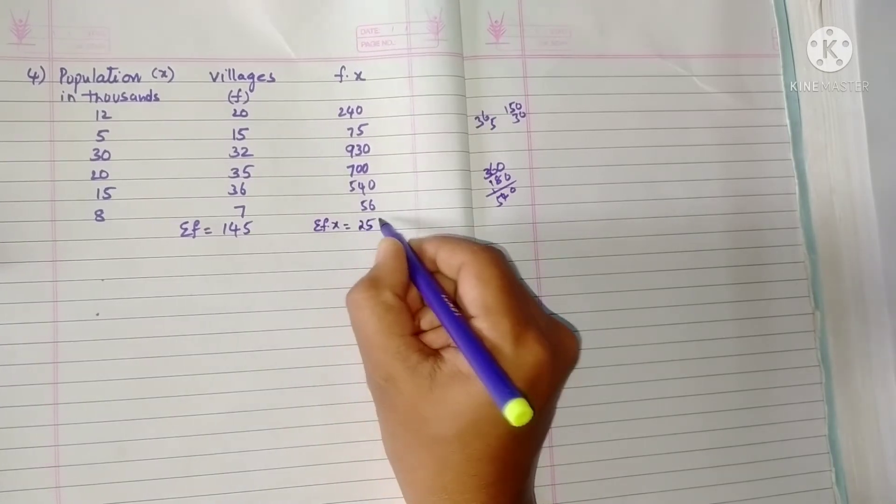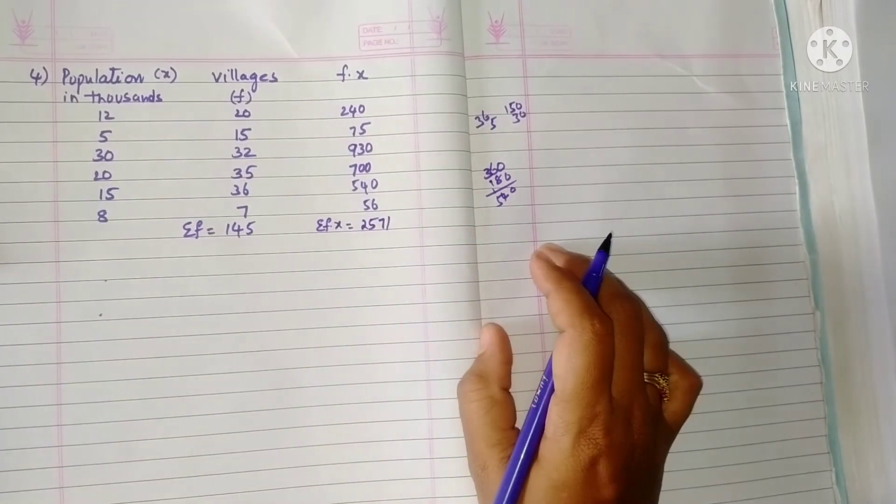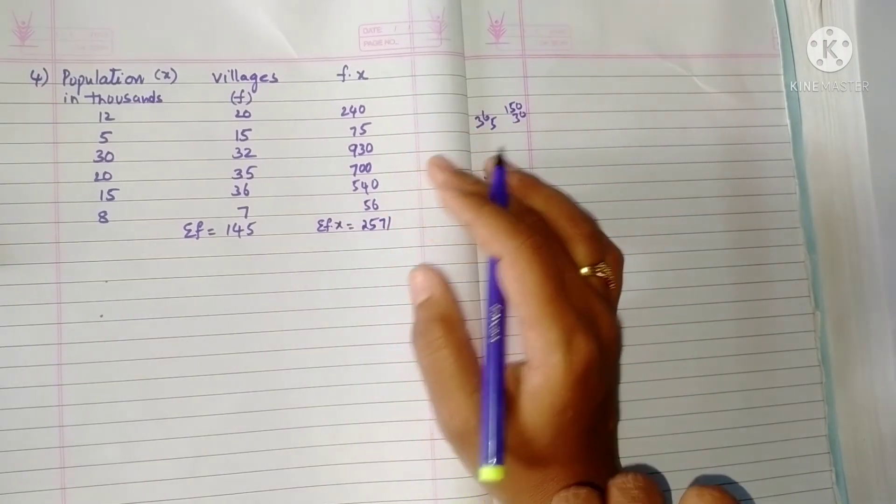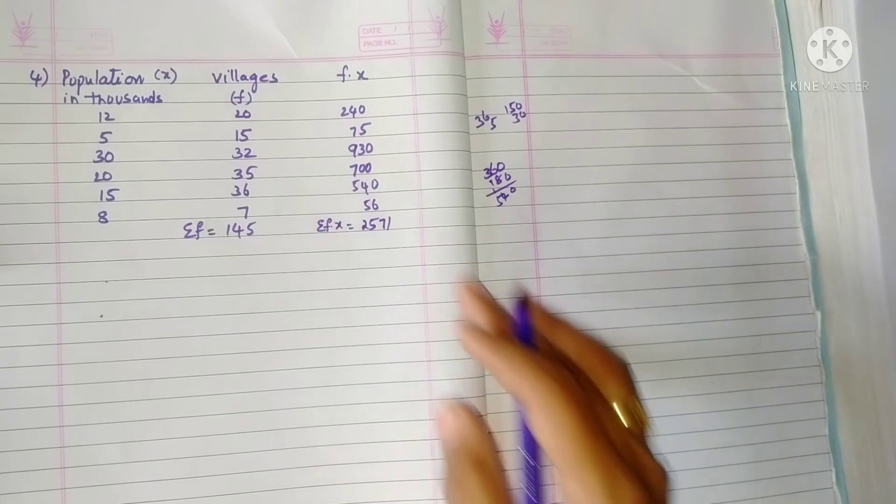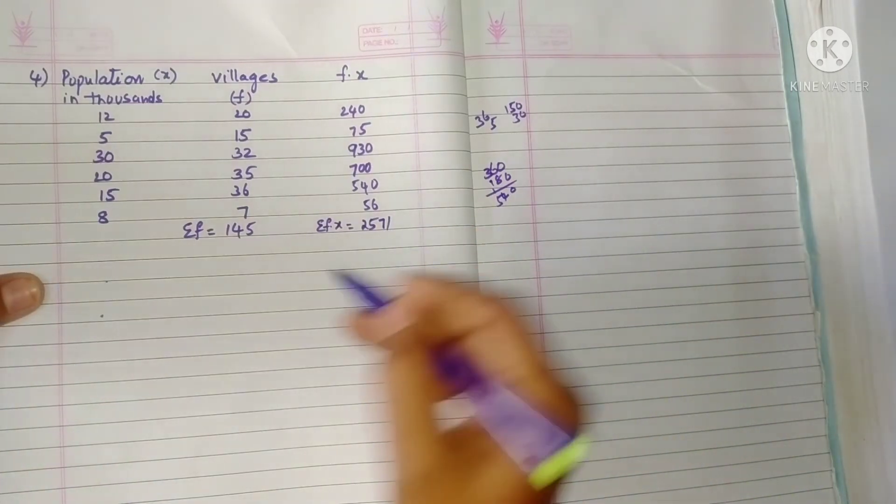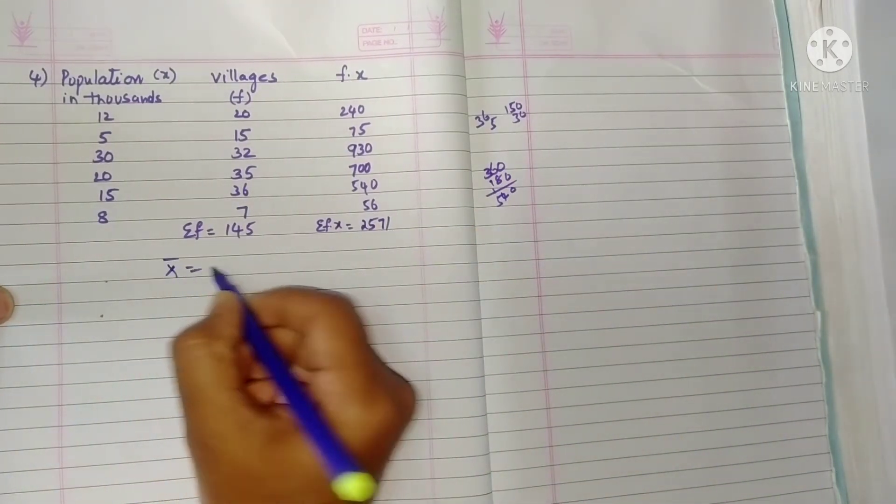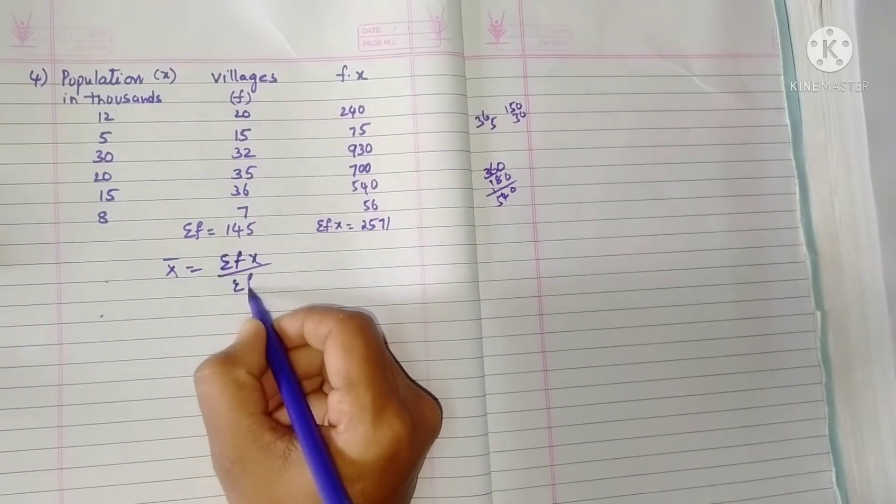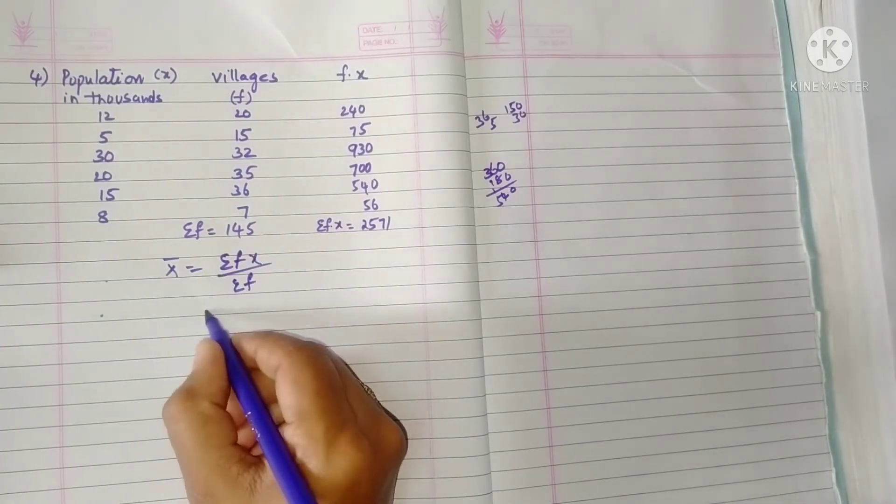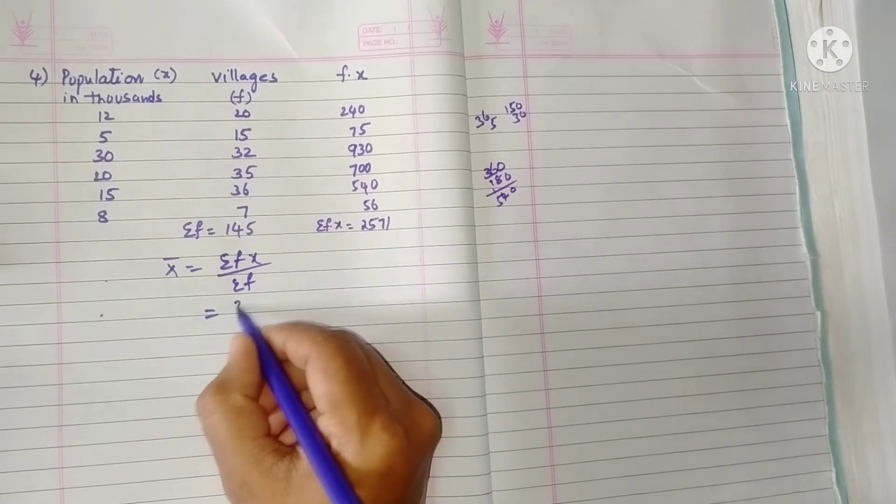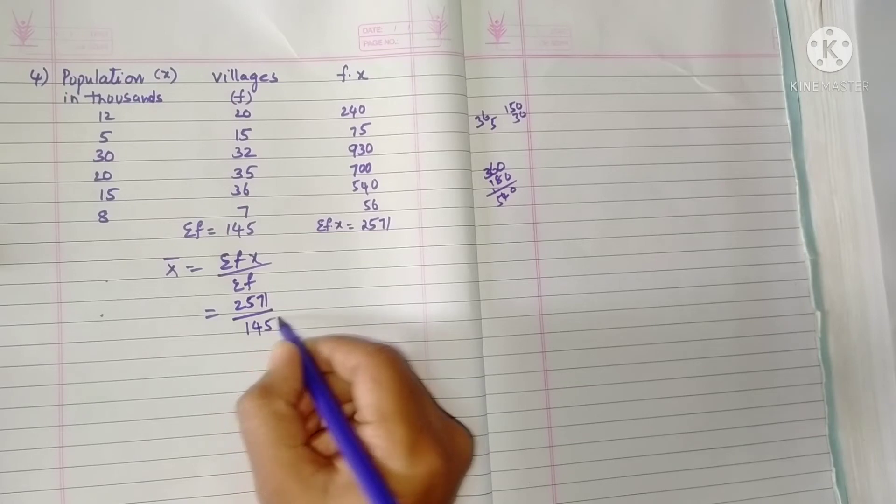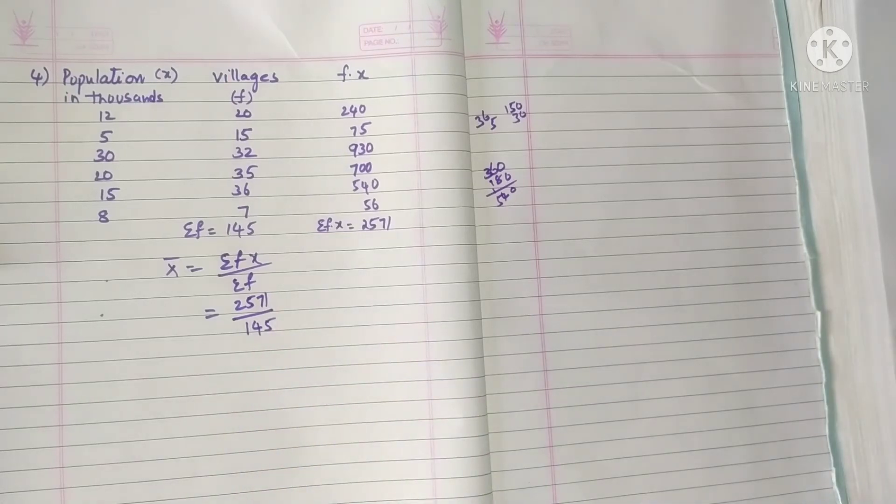And if we add sigma fx, we will get 2571. I'm not explaining the addition here, students you can add. Now formula for mean: x bar is equal to sigma fx by sigma f. So what is this sigma fx? 2571 by 145.